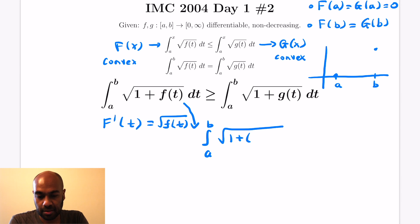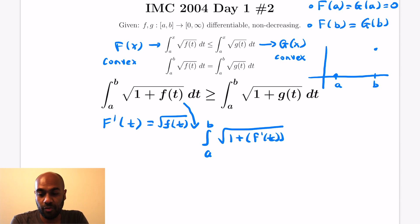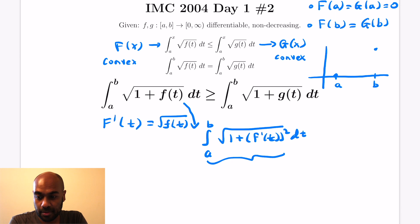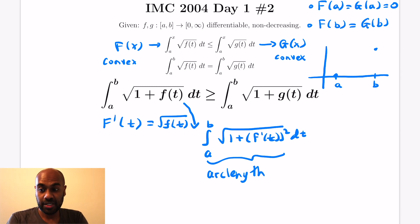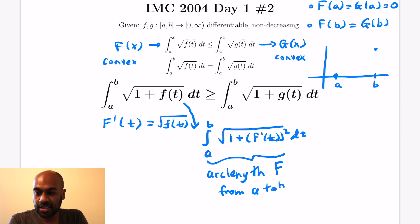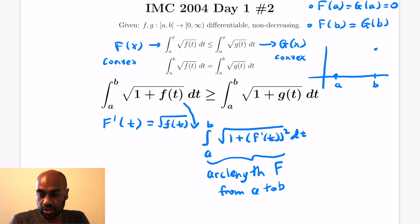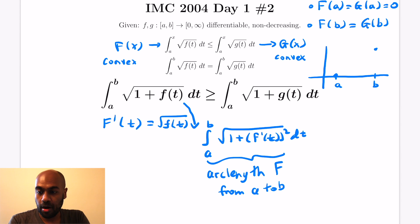Capital F prime of t is the square root of little f of t, so the integral becomes the integral from a to b of the square root of 1 plus capital F prime of t squared dt — that's the arc length of capital F from a to b. Similarly, the right-hand side is the arc length of capital G. Capital G is graphed from a to b, and capital F, by the given inequality, lies under capital G. Since both are convex and share the same endpoints, the arc length of F is greater than or equal to the arc length of G — exactly the inequality we wanted to prove.